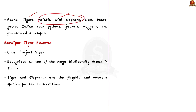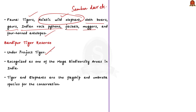Bandipur also has a number of endangered species like sloth bears, gaurs, Indian rock pythons, jackals, muggers and four-horned antelopes. It also has sambar deer, mouse deer, chital, sloth bear and rare flying lizard. The Bandipur Tiger Reserve is under Project Tiger and is recognized as one of the mega biodiversity areas in the country.